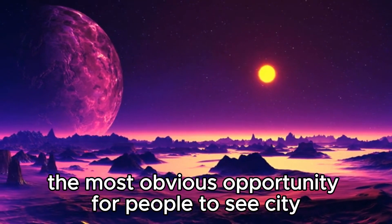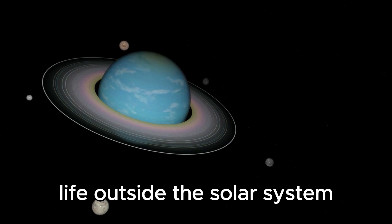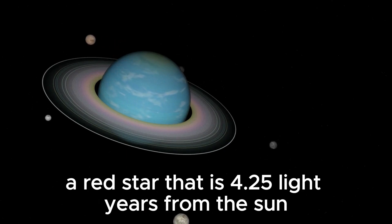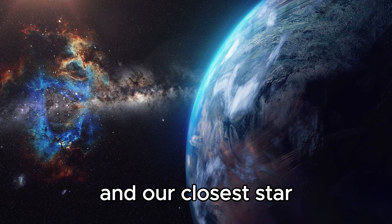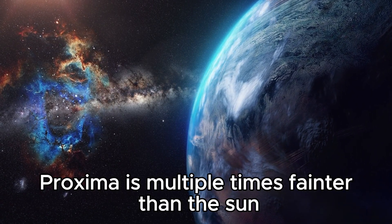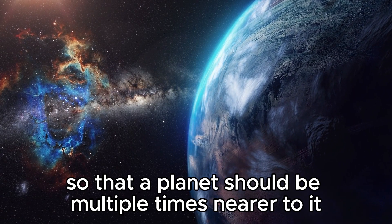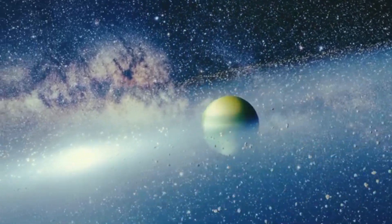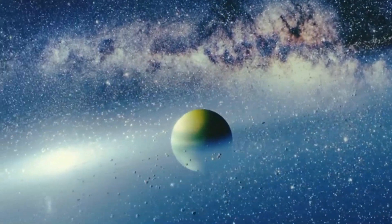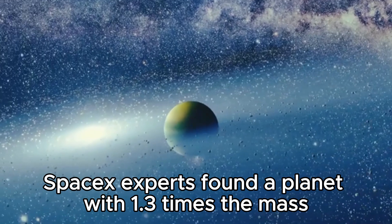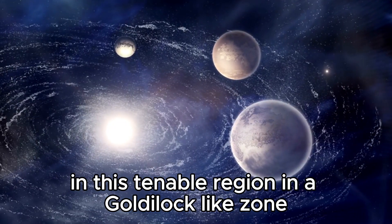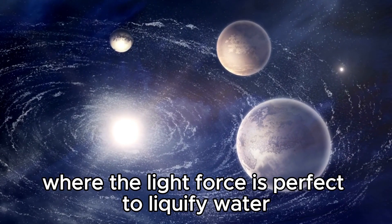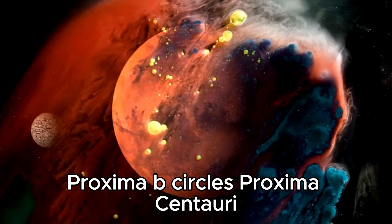Because of the close orbit of its planets, the most obvious opportunity for people to see city life outside the solar system is Proxima Centauri, a red star that is 4.25 light years from the Sun and our closest star. Proxima is multiple times fainter than the Sun, so a planet should be multiple times closer to it than Earth is to the Sun for it to support life because of liquid water. In August 2016, astronomers found a planet with 1.3 times the mass in this habitable region.